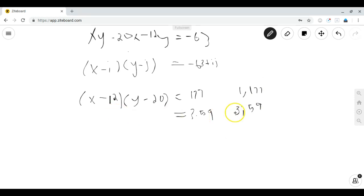Similarly, if we take x minus 12 equals 3 and y minus 20 equals 59, we won't have a solution.